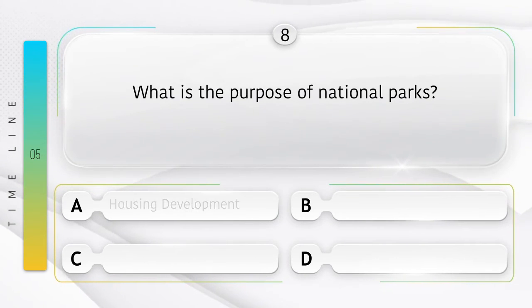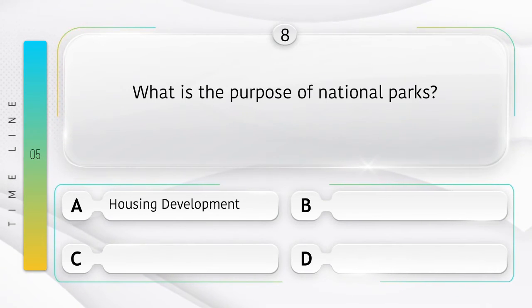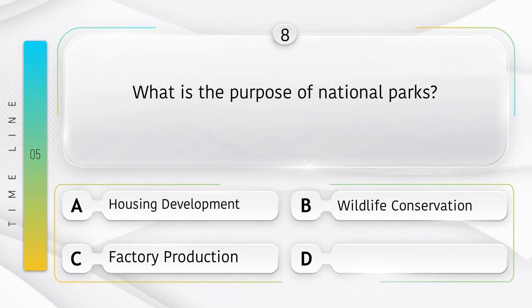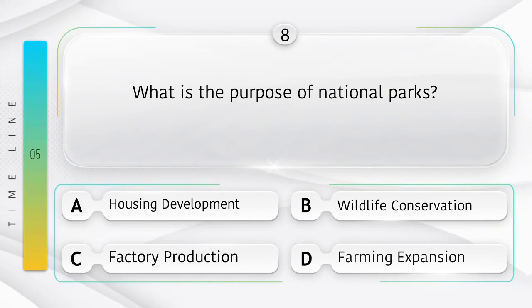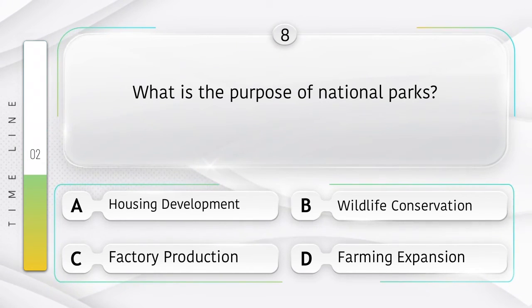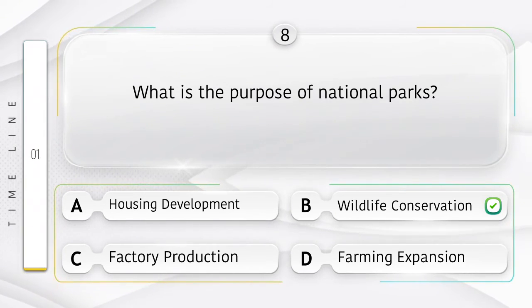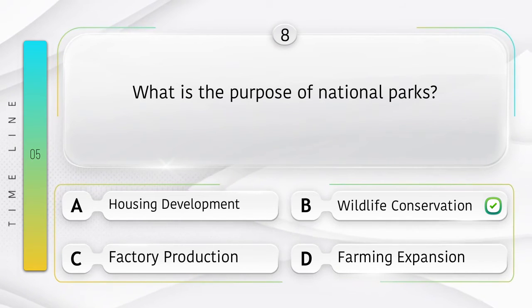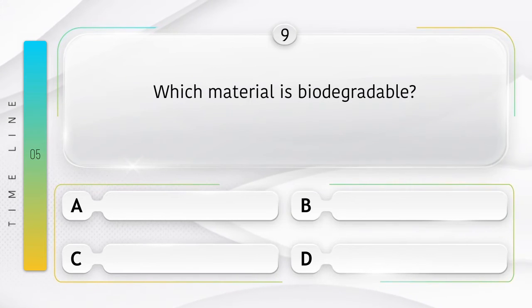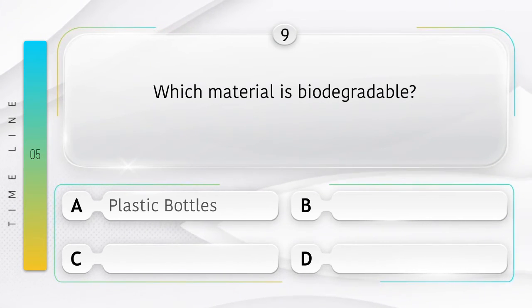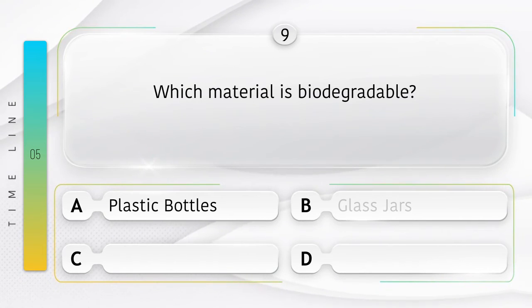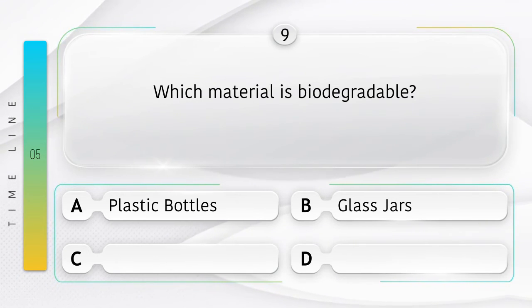What is the purpose of national parks? Option A: housing development. Option B: wildlife conservation. Option C: factory production. Which material is biodegradable? Option A: plastic bottles. Option B: glass jars. Option C: organic waste. Option D: metal cans.